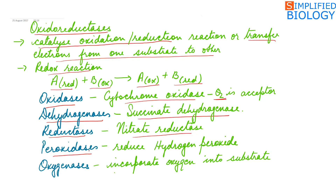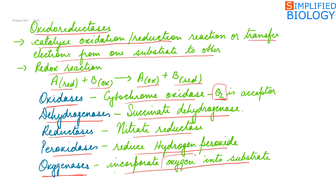Peroxidases are found in peroxisomes, where they reduce the hydrogen peroxide that is formed. Oxygenases incorporate molecular oxygen into the substrate. The difference between oxidase and oxygenase is that oxidase passes electrons to molecular oxygen, while oxygenases incorporate molecular oxygen into the substrate.